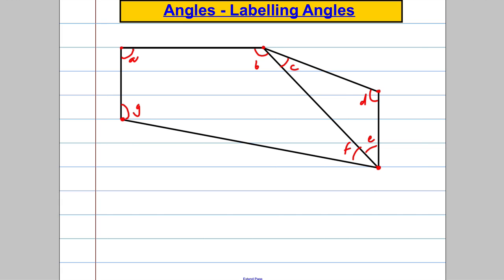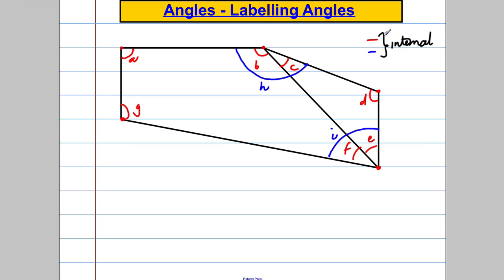This is where an extra layer of complication comes in. What about this whole angle here? That's got a name as well — it's the sum of B and C, and you might call it H, and you might label this one I. These are all internal angles, inside the shape, but you might also consider the external angles, which are shown with green lines.